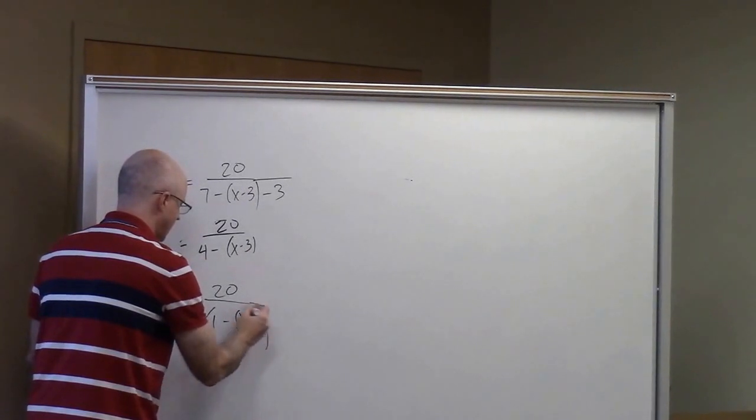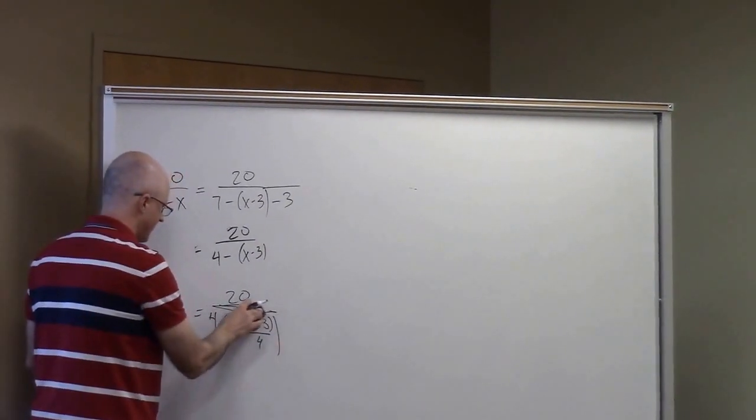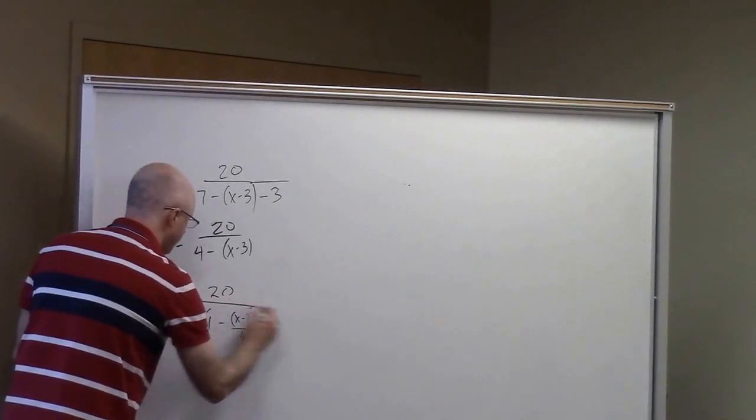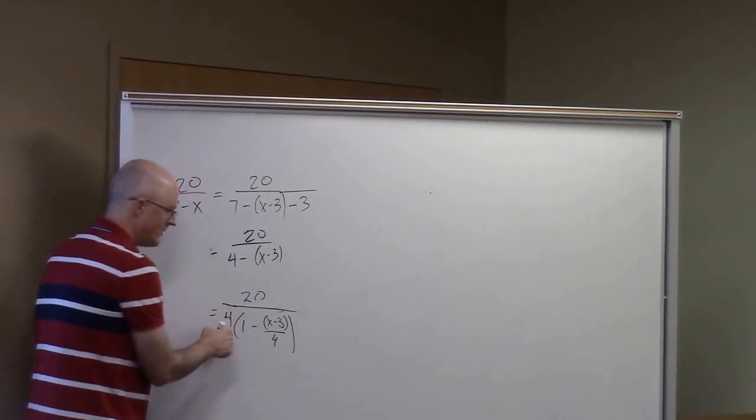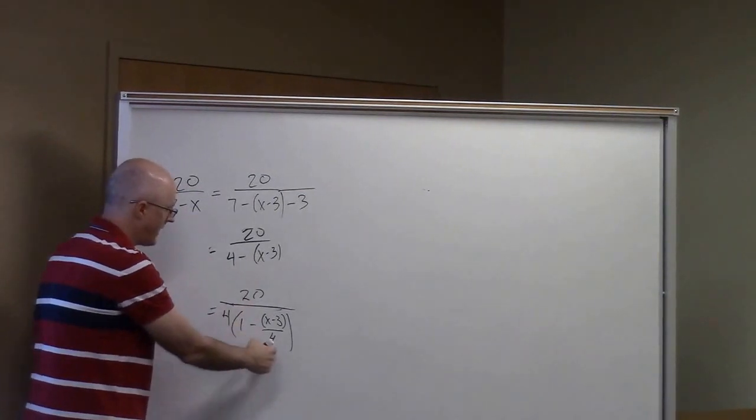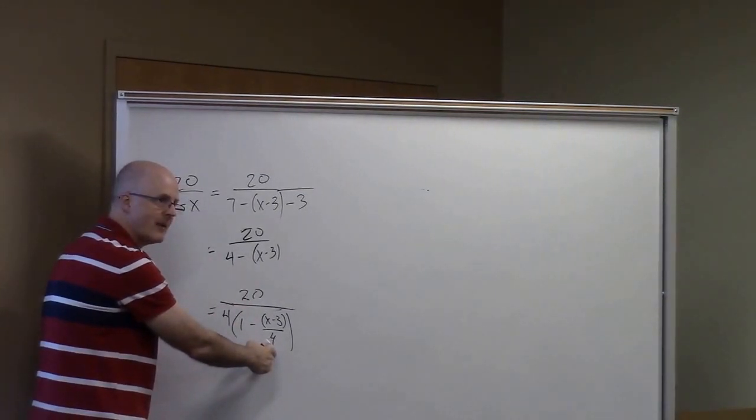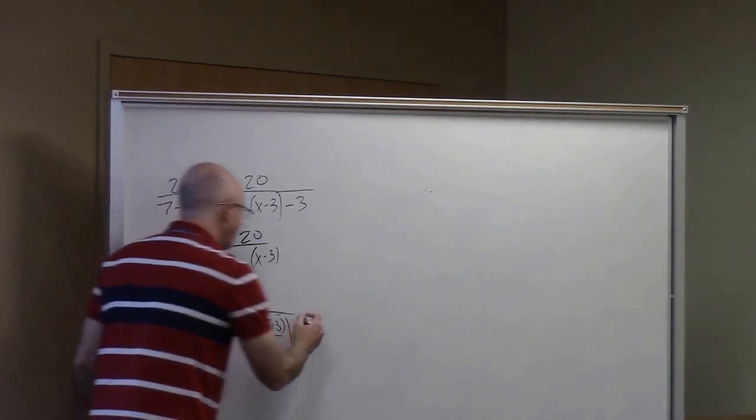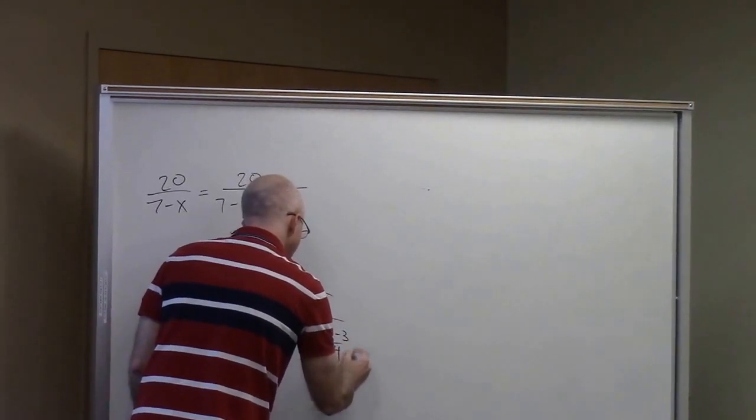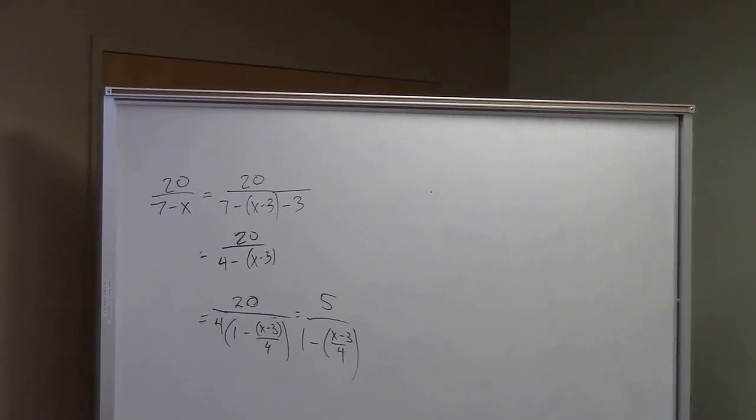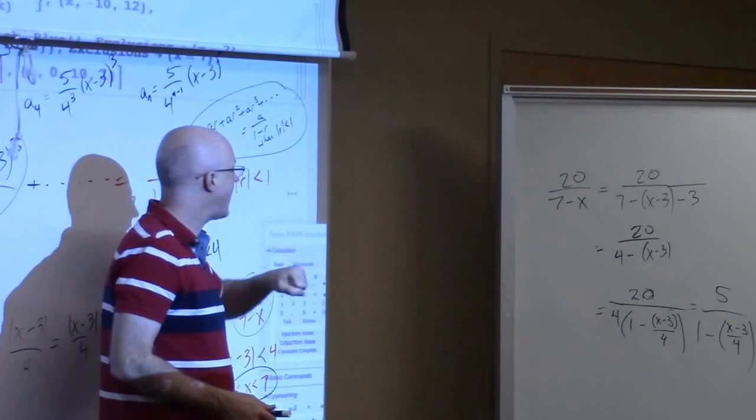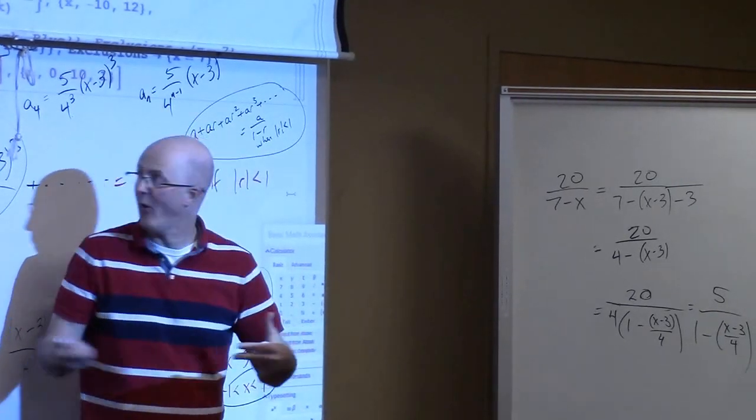Like that. 20 over... This product is equal to that. I factored a 4 out. I compensated for factoring a 4 out by putting a 1 there and then divide by 4 there. And now 20 divided by 4, that's 5. That's now in the form something over 1 minus something. a is 5. r is x minus 3 over 4. It worked.